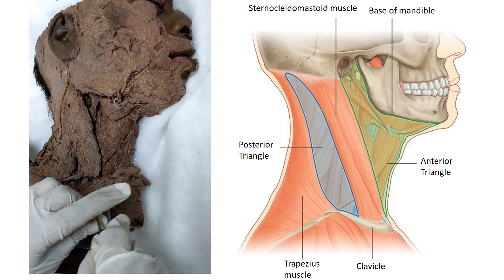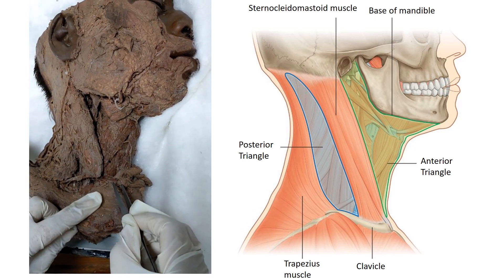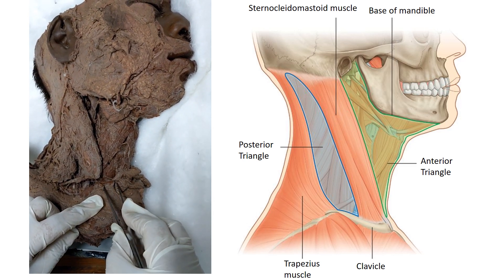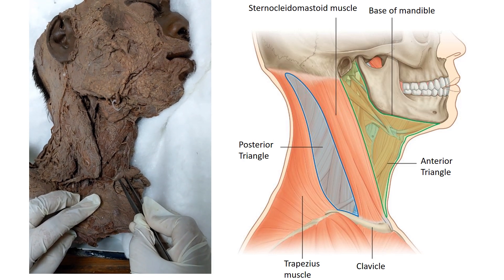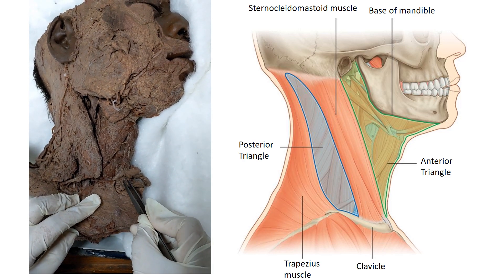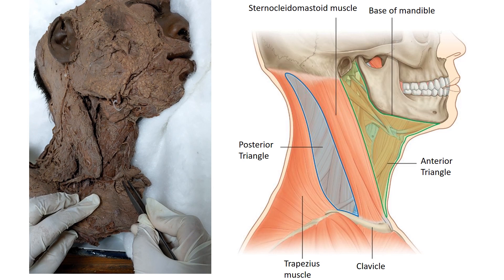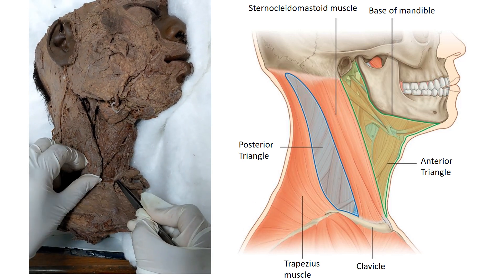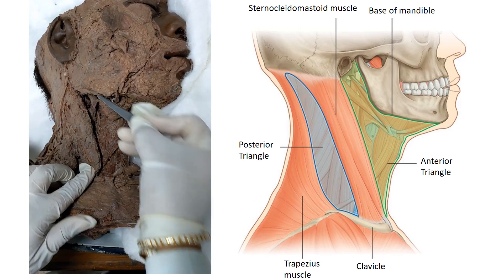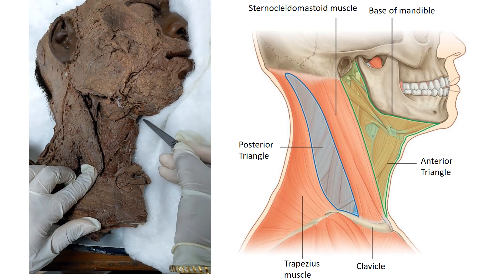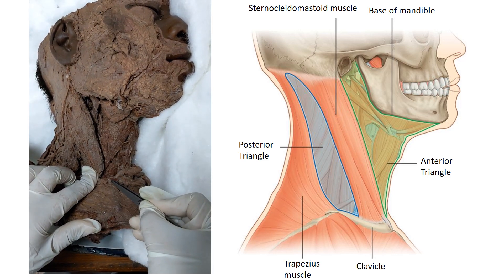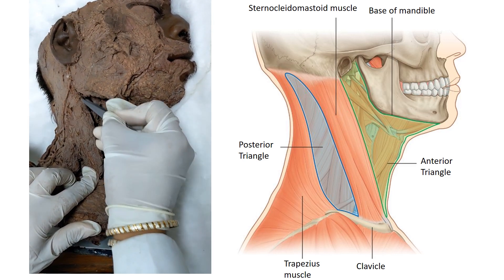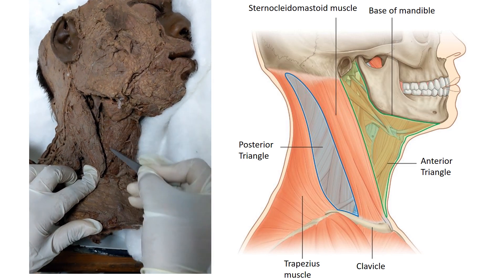The apex of the triangle is directed below and is formed by the suprasternal notch. This is the apex of the triangle, this is the base of the triangle, this is the anterior border, and this is the posterior border — forming the anterior triangle of the neck.